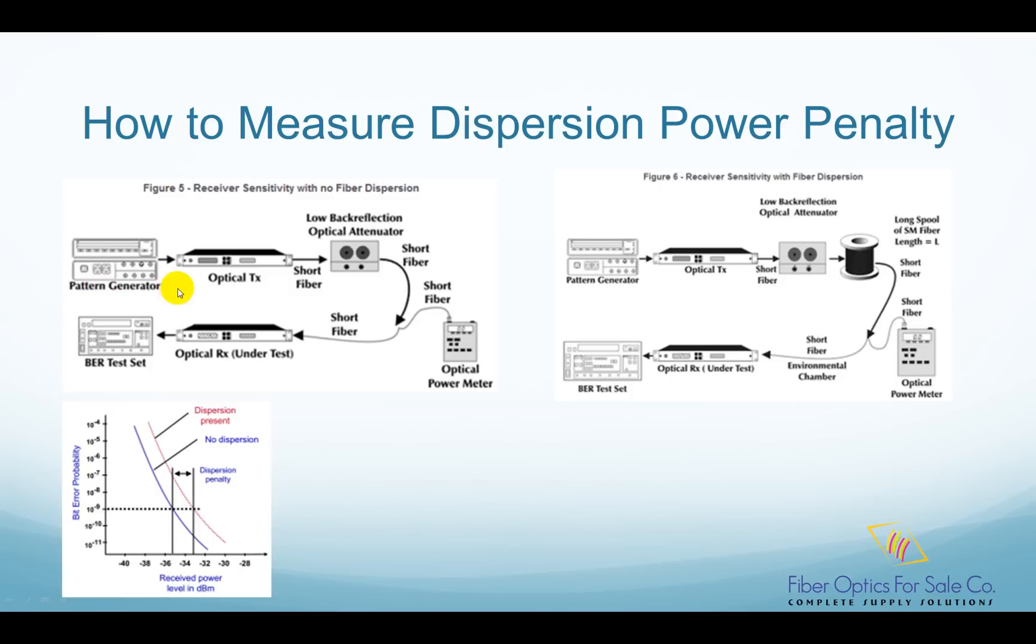It has a digital pattern generator, the optical transmitter, low back reflection optical attenuator, the optical receiver, the bit error ratio test set, and the optical power meter. All fibers in this setup are short length, so their dispersion effect can be omitted.